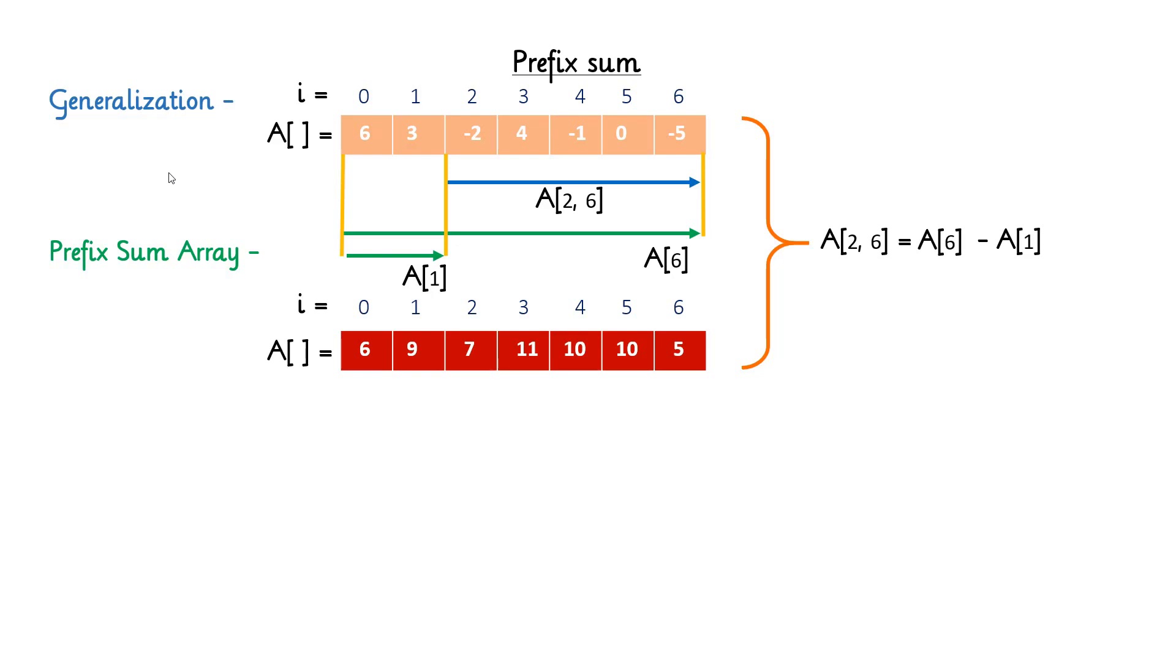So here you can see to calculate the sum between 2 to 6 we have subtracted A[1] from A[6]. So to calculate the sum between 2 to 6 we have taken A[6] value minus the indexes mentioned for indexes less than that, so it's A[1]. So to calculate the sum between range from i to j, you can use the below formula: A[i,j] equals A[j] minus A[i-1].